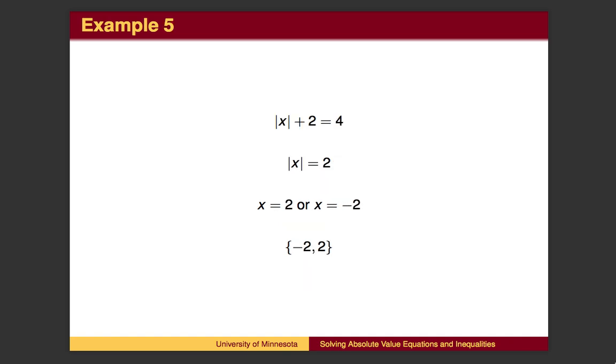In this case, there is some manipulation to be done first. There are no procedures for moving numbers into and out of the absolute value, only the definition of the absolute value. So we must first isolate the absolute value. We do this by subtracting 2 from both sides.